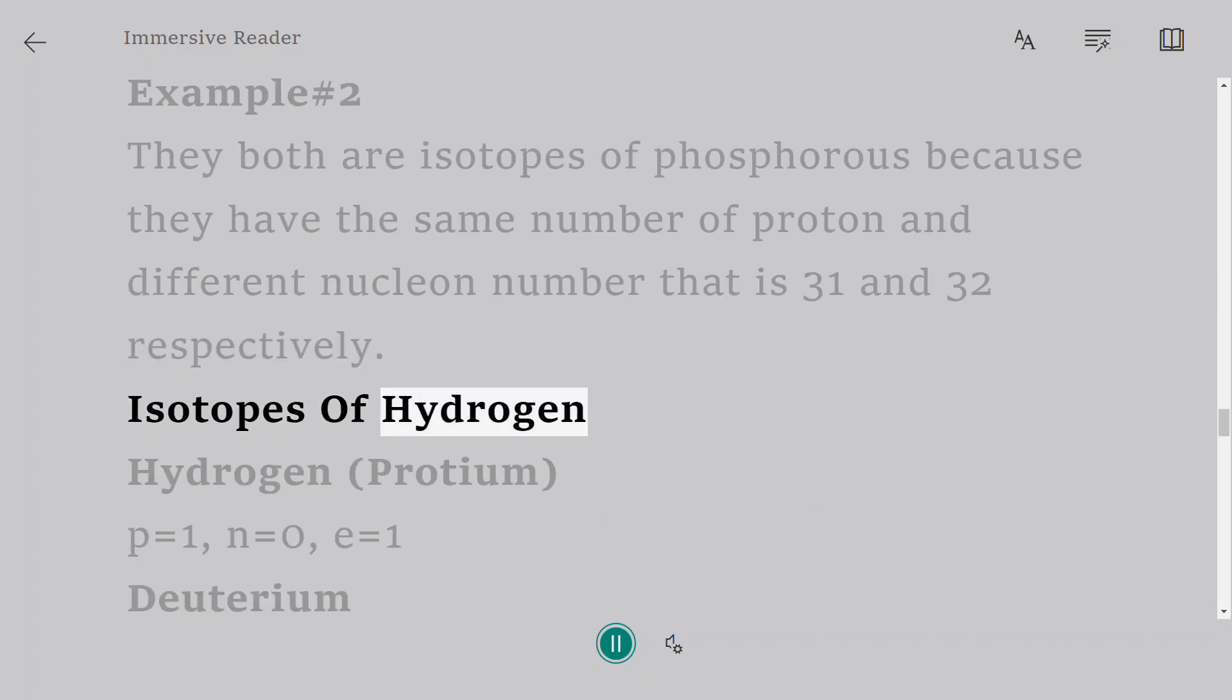Isotopes of hydrogen: Hydrogen (Protium) P equals 1, N equals 0, E equals 1.